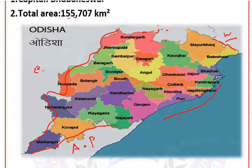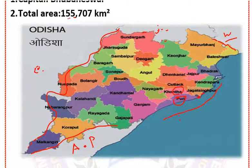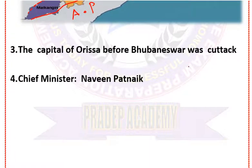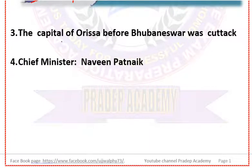Paradip is a famous port of Odisha, located in Puri district. Puri is also a famous port of Odisha. The capital of Odisha before Bhubaneswar was Cuttack.